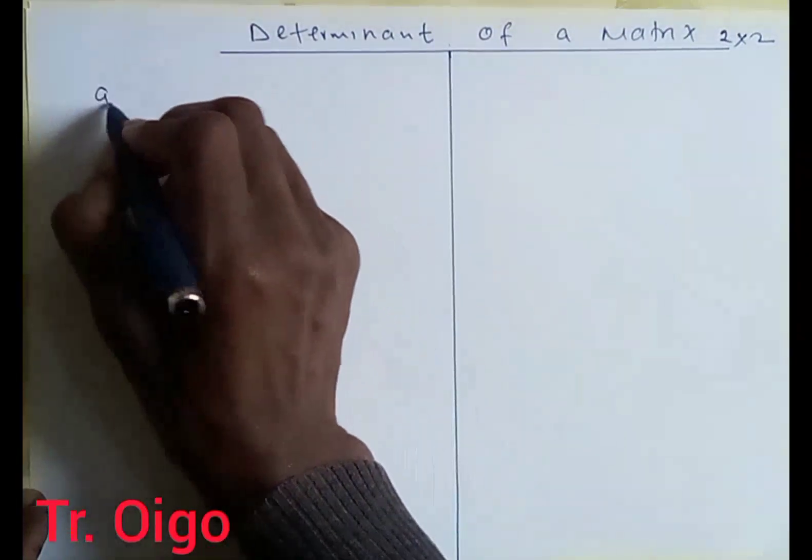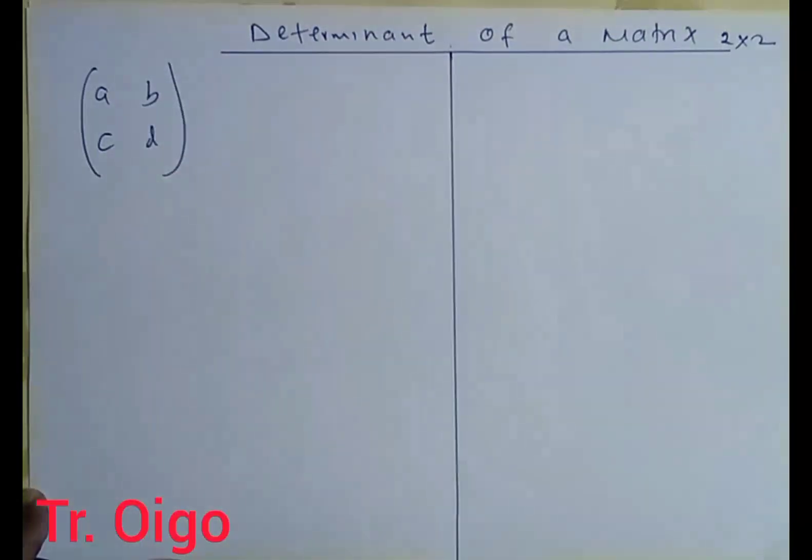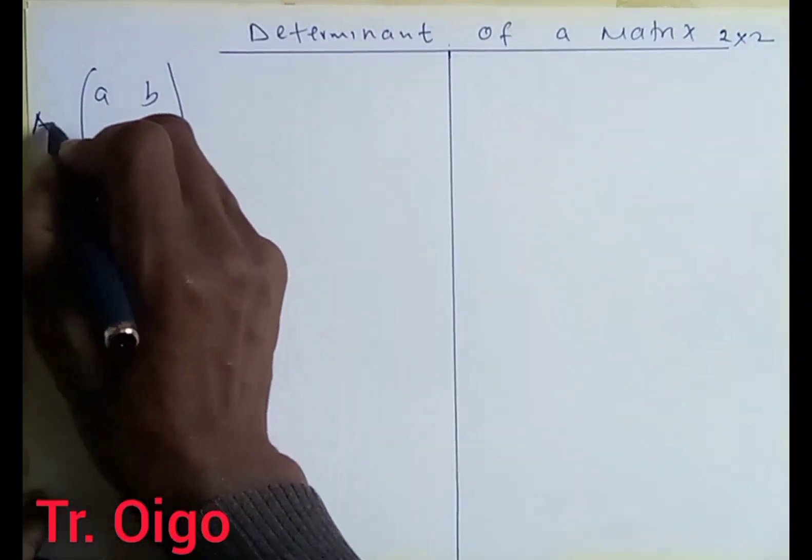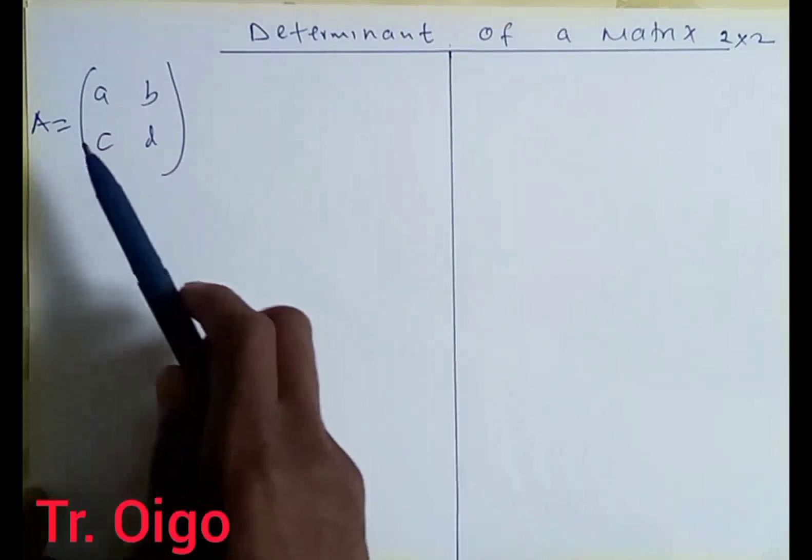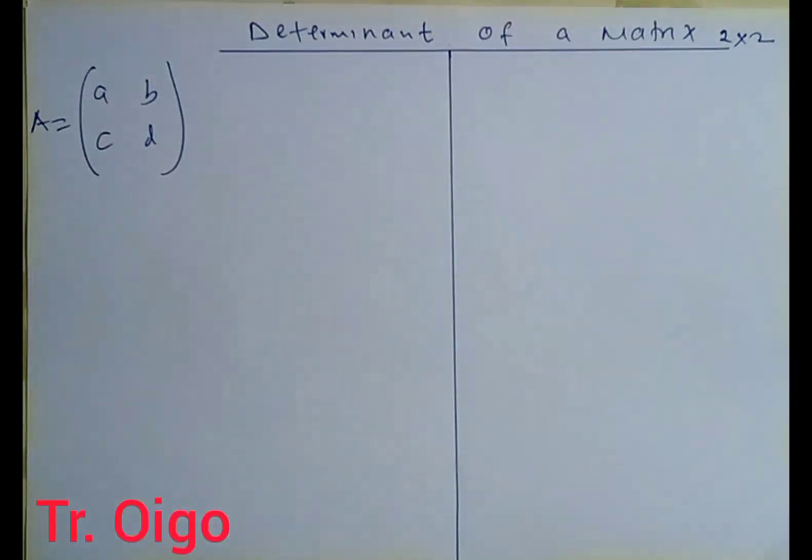Now I want you to consider a matrix of the following elements A, B, C and D. This matrix A is given by A, B, C, D. These numbers inside the matrix, we refer to as elements.